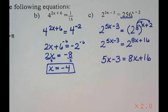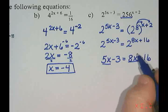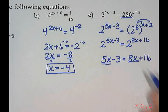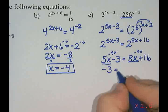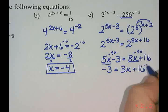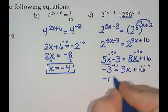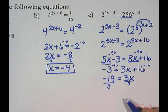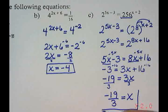Now I solve this grade 9 style. I have x's on both sides, so I'll subtract 5x from both sides to avoid negatives, giving negative 3 equals 3x plus 16. Subtracting 16 from both sides: negative 3 minus 16 is negative 19. Then dividing by 3 gives x equals negative 19 over 3. It's not a nice number, but sometimes we get fractions as answers.